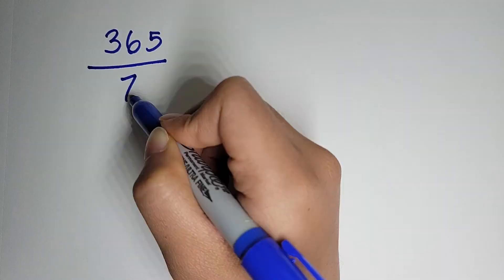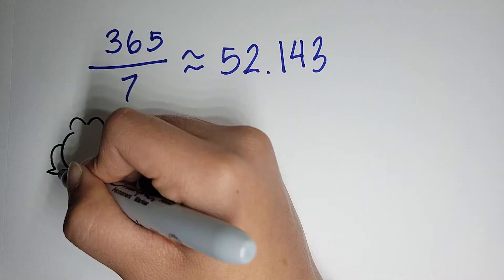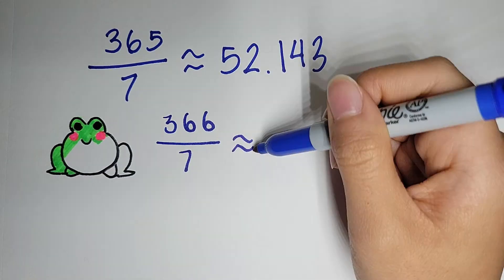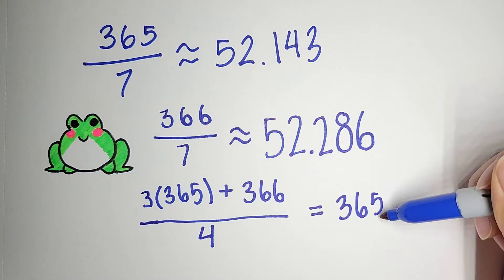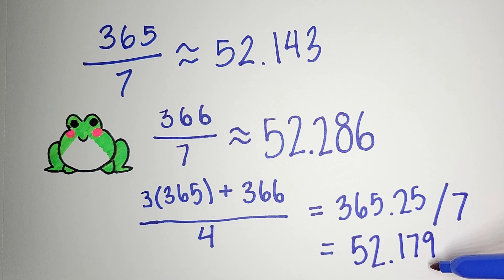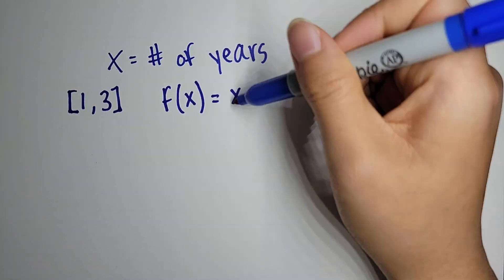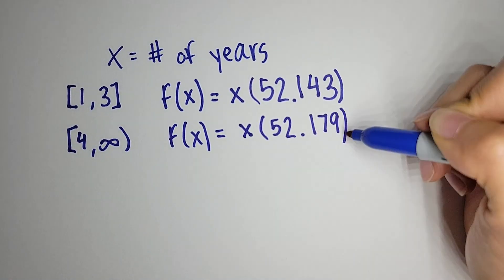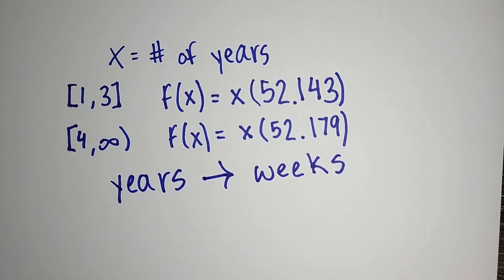First, let's look at what the average amount of weeks look like in a normal year. But we also have to account for leap year, which brings out the value to 52.179 weeks. There are two equations that represent the total of weeks people from the ages of 1 and up have lived by converting years into weeks.